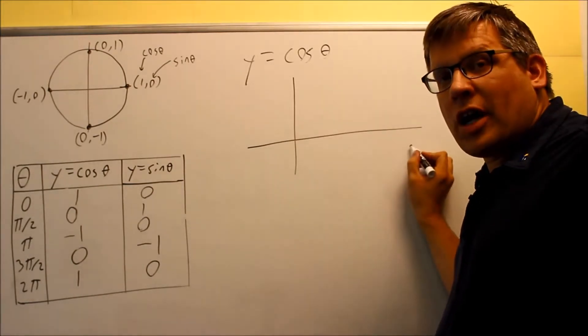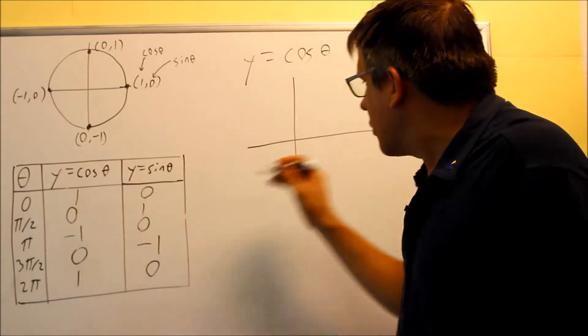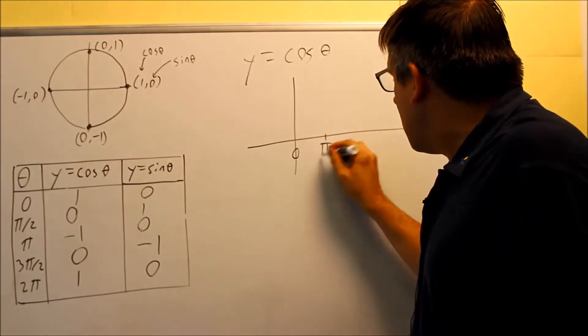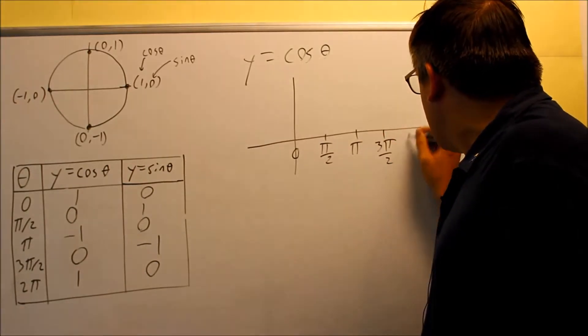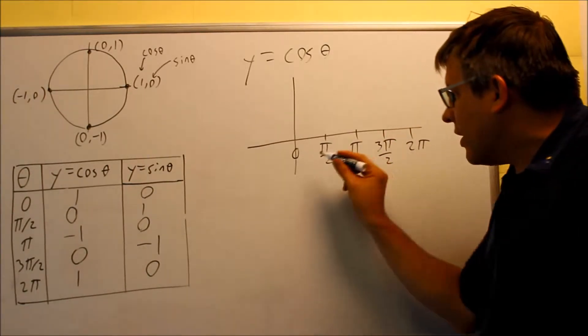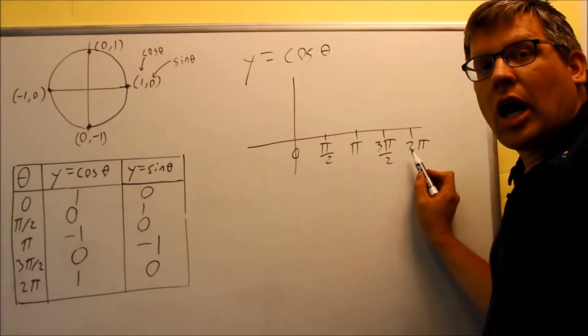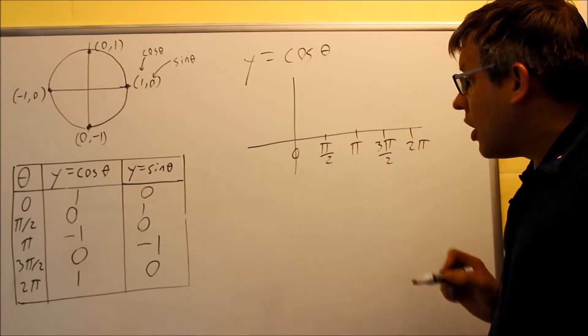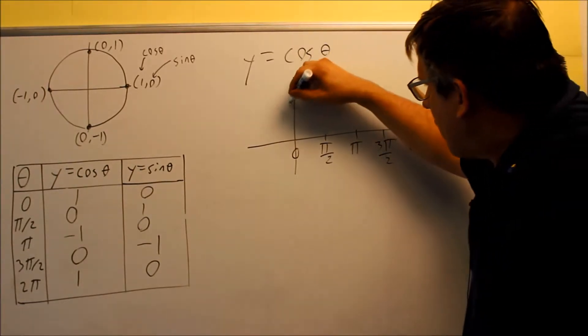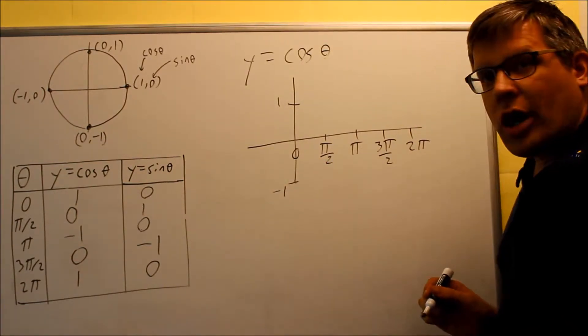So I have, these are my key points. I have zero, pi over two, pi, three pi over two, and two pi. So all the values on here, they appear here on my x-axis. And this is really my thetas that I have going along here. I'm going to plot, here's one and here's negative one on my graph.